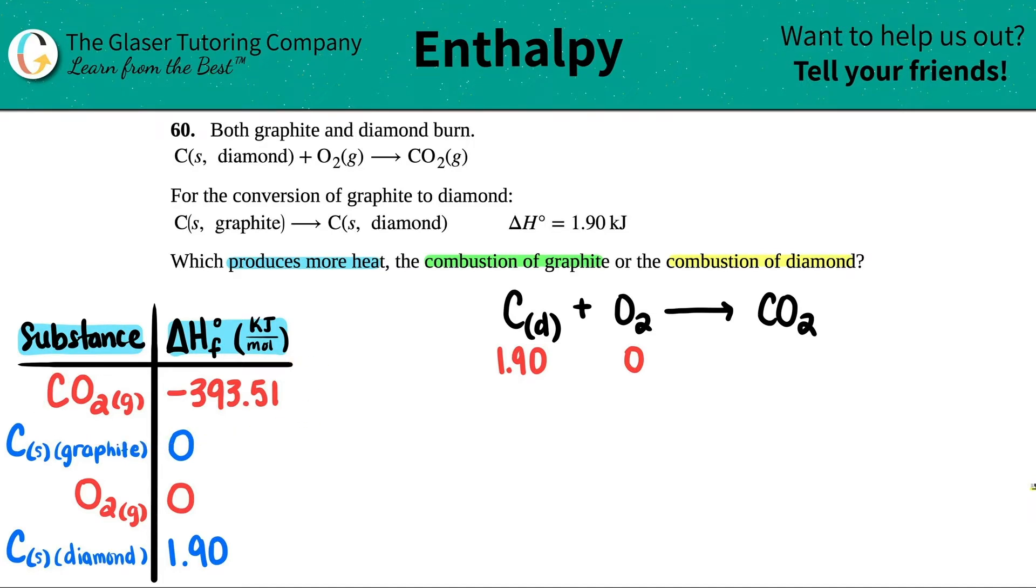For this oxygen is zero, and then carbon dioxide is a whopping negative 393.51. Now how do we find a delta H for a reaction? It's a very simple formula. I'll put it up here. If you want to find a delta H, it's just the sum of all the delta H's of the products minus the sum of all the delta H's of the reactants.